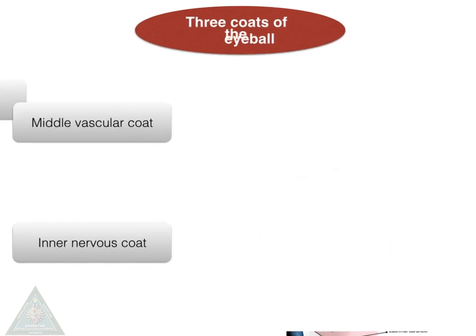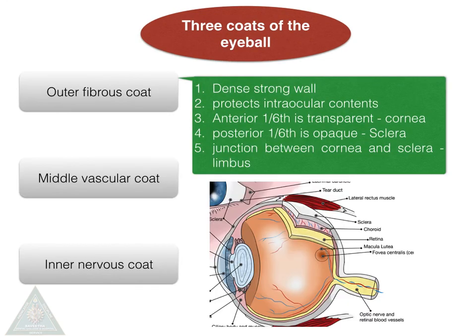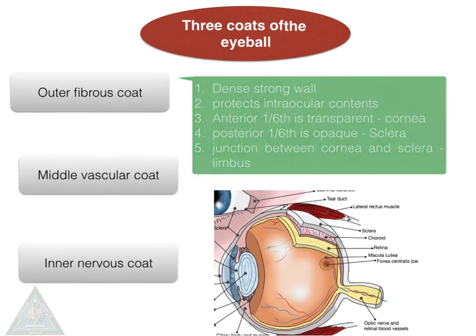The outer fibrous coat is a dense, strong wall that protects the intraocular contents. The anterior one-sixth is transparent, which is the cornea, and the posterior five-sixths is opaque, which is the sclera. The junction between the cornea and sclera is termed the limbus.